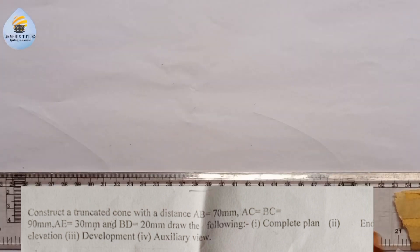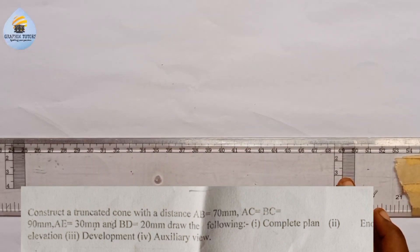Now let's see what this question is talking about. It says AB is 70 millimeter. Let's do that first.